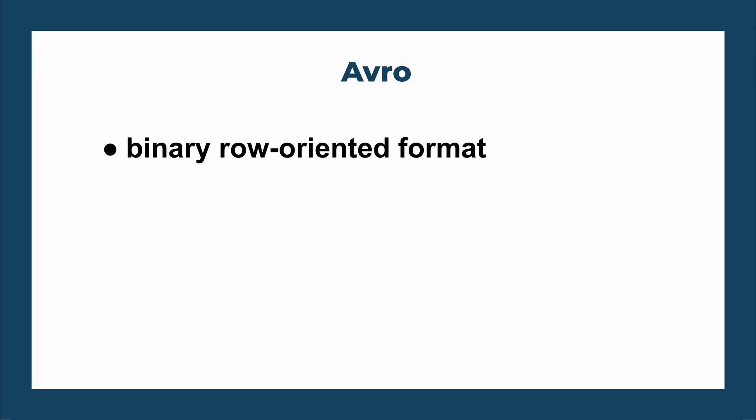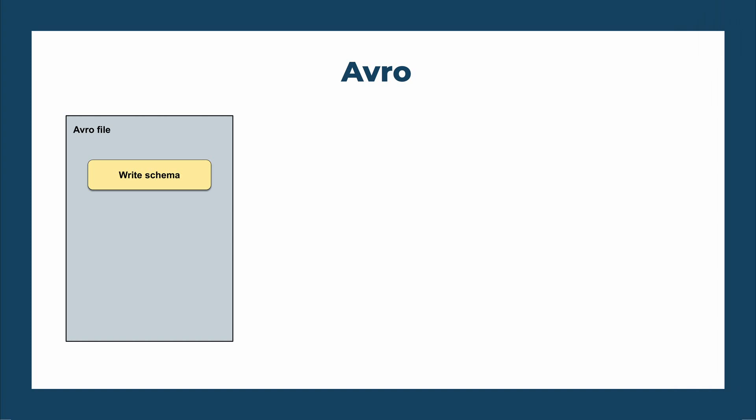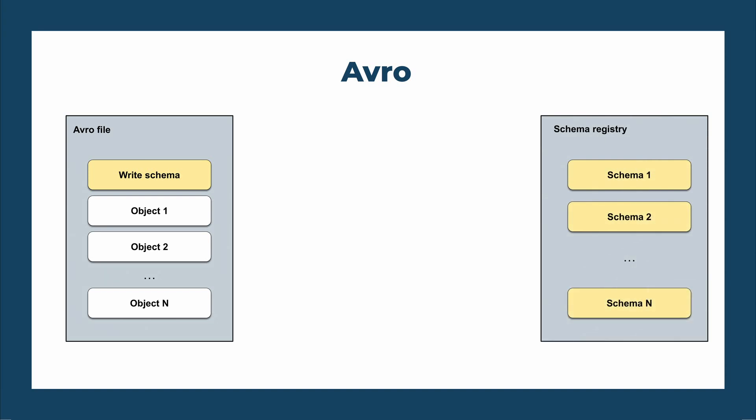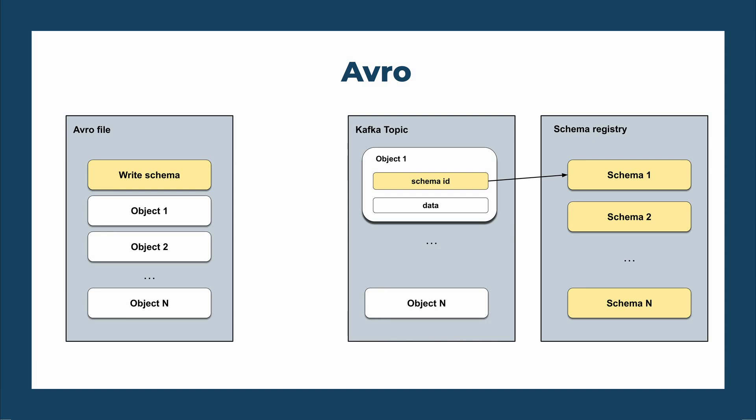The most popular way of serializing your data before publishing to Kafka is Avro, which I'll use as an example of a row-oriented serialization format. It's a binary row-oriented format, optimized for low write latency and sequential reads. A standalone Avro file typically includes both schema and data so that the file is self-describing. However, Kafka is agnostic to the serialization format, so if we use Avro with Kafka the schema is stored in the schema registry, which is a separate application, and a serialized object consists of the binary data and the schema ID that was used to serialize it.